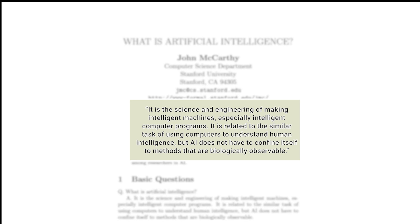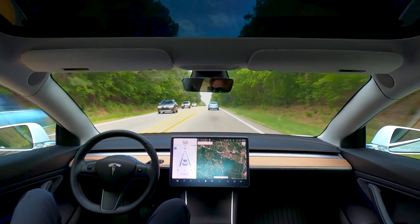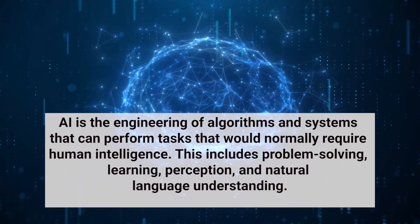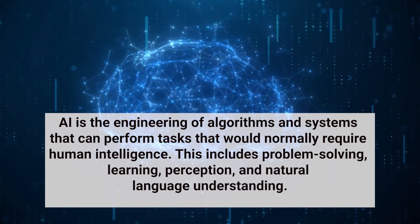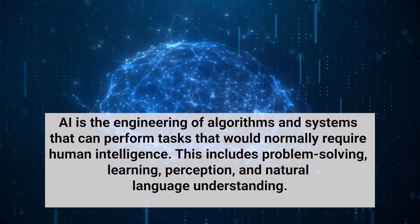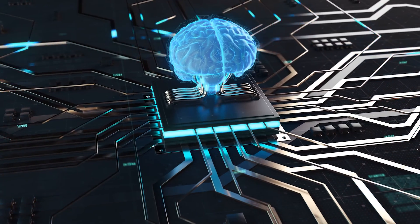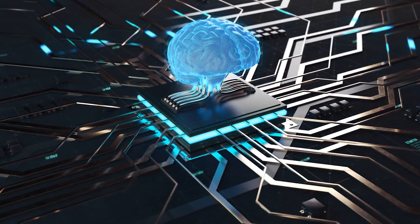It is related to the similar task of using computers to understand human intelligence. But AI does not have to confine itself to methods that are biologically observable. Things like Amazon Alexa or Apple Siri, even Tesla's self-driving cars are an example of AI in everyday life. So to combine both definitions, AI is the engineering of algorithms and systems that can perform tasks that would normally require human intelligence. This includes problem solving, learning, perception, and natural language understanding.